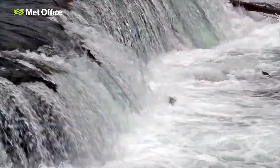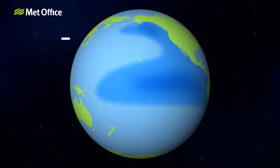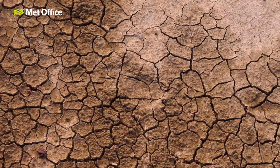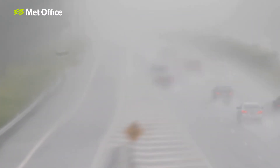In the PDO's negative or cool phase, this pattern is reversed — cooler sea surface temperatures in the horseshoe surround a core of warmer waters. Cold PDO events have been linked to severe droughts spanning many years in southwestern USA and increased rainfall over eastern Australia.